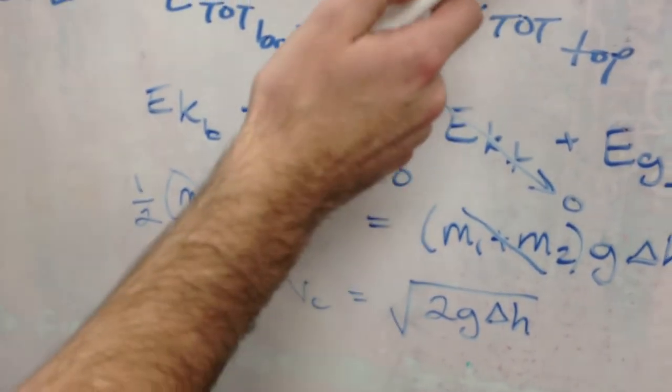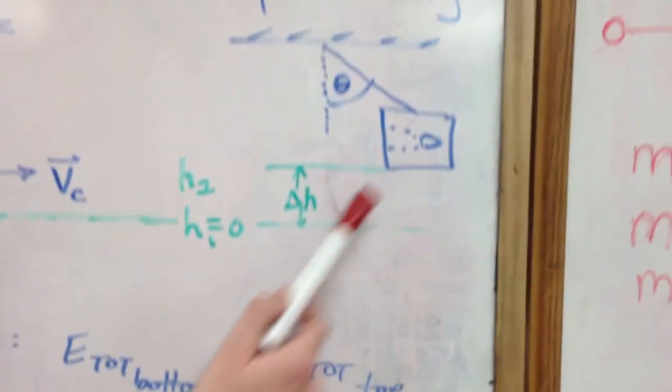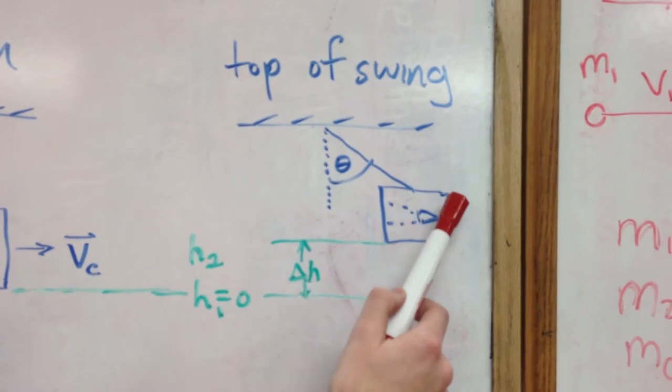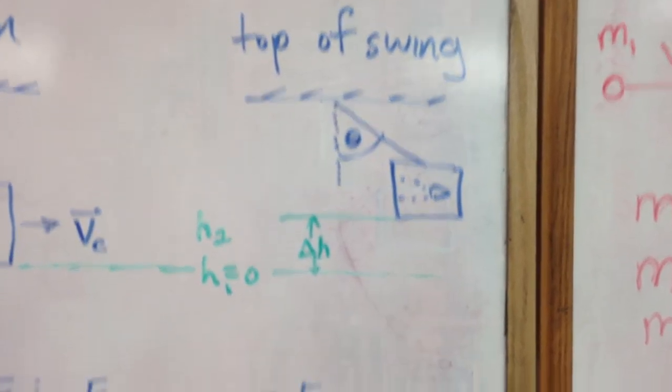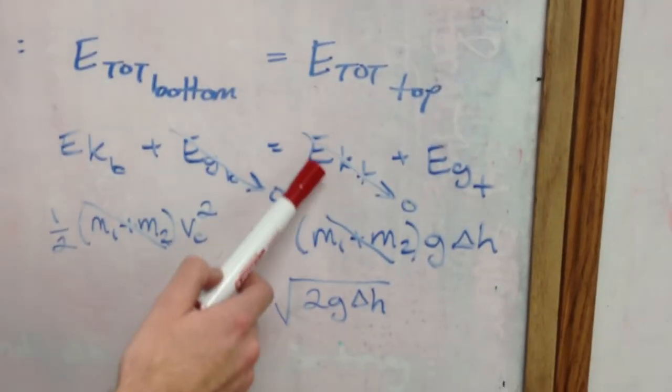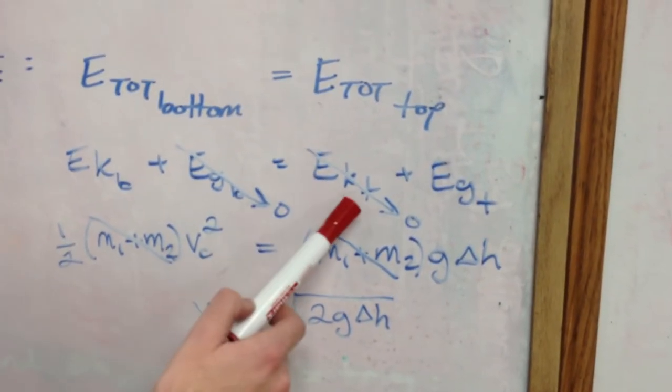When the box reaches its maximum height, as it moves upwards, it stops there, meaning its velocity is now 0. Thus, the kinetic energy for that box is now 0.